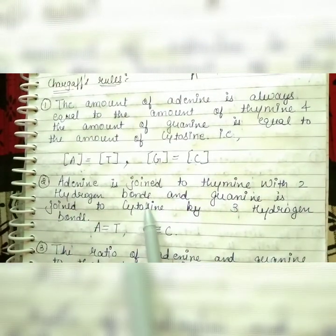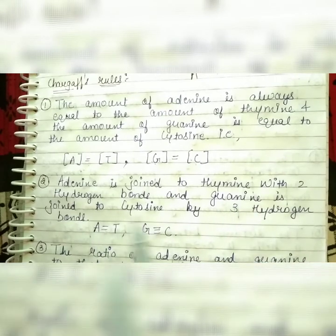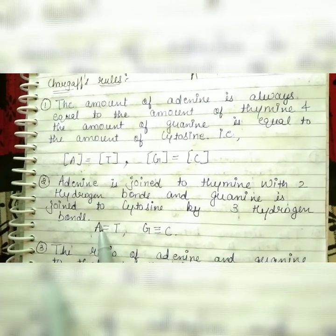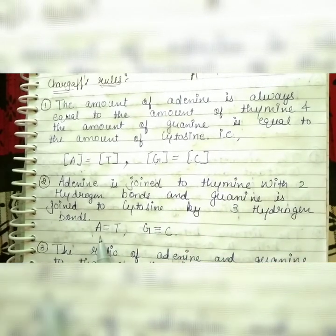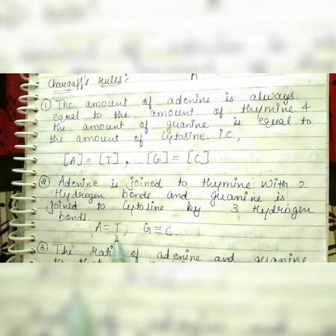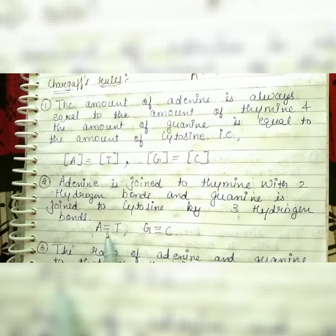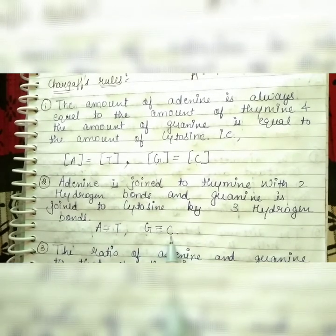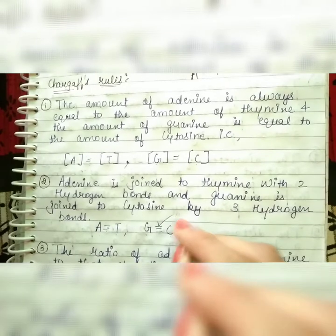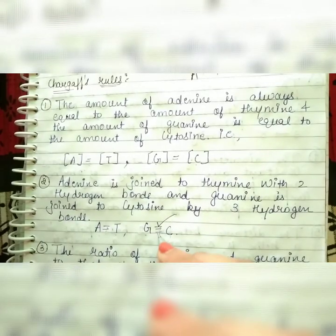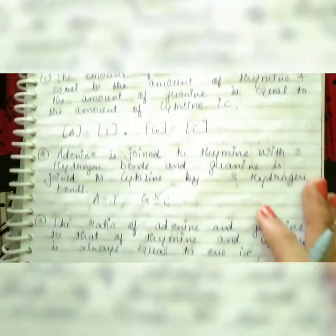The second rule states: adenine is joined to thymine with two hydrogen bonds, and guanine is joined to cytosine by three hydrogen bonds. So A-T has a double hydrogen bond, and G-C has a triple hydrogen bond.